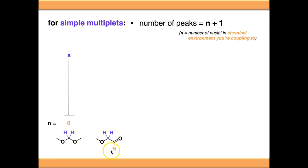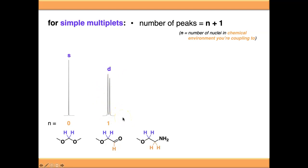If we change the molecule and put a proton in a different chemical environment but within range to couple with, the purple protons can now couple with this orange one. We now have one adjacent proton, and 1+1 gives us 2, so a doublet is a signal with two peaks. Going to a slightly more complex example with two protons in the adjacent environment, N is 2, and 2+1 is 3, giving us a triplet signal.